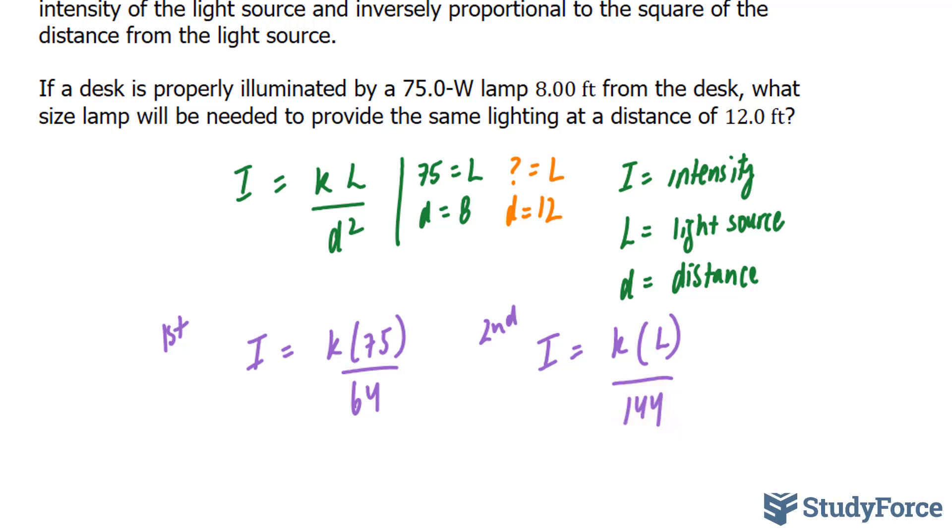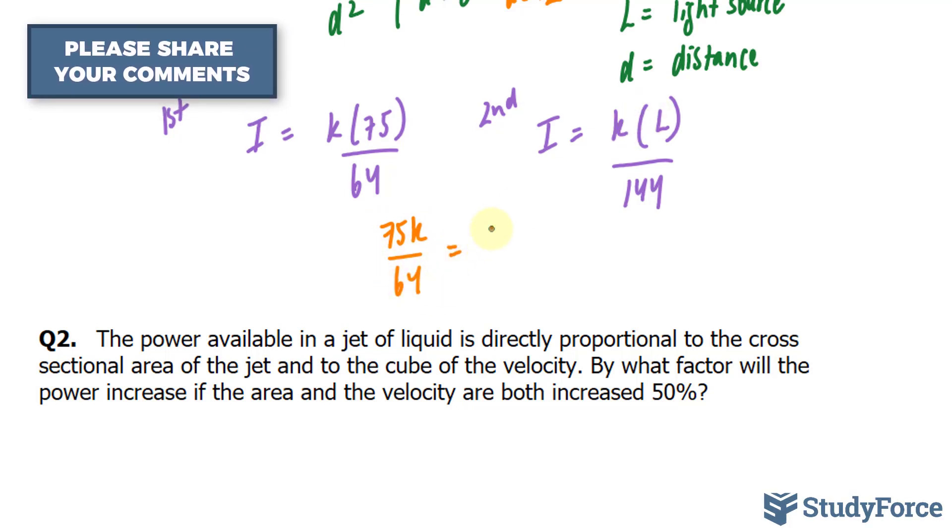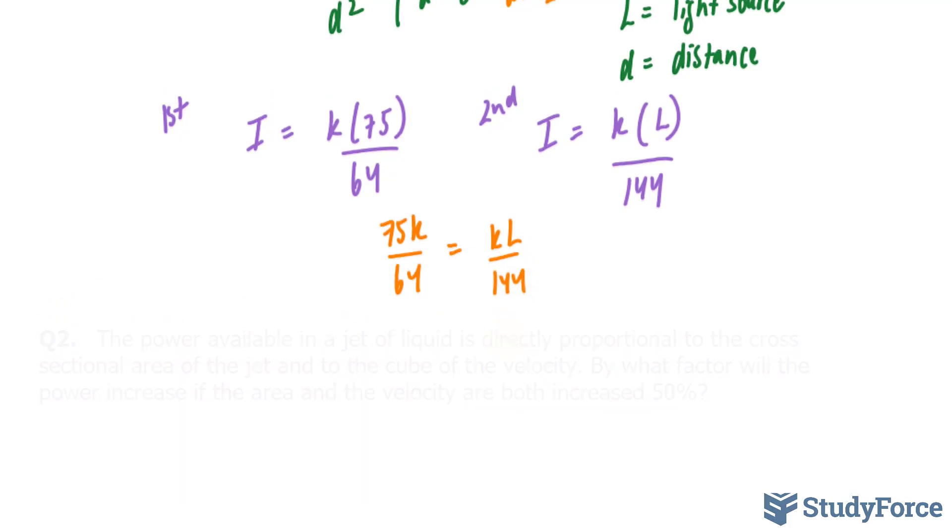Now because we have two equations and both have the variable I, we can set this part of each equation equal to each other. Here's what happens if you do that: we have 75K over 64 equals KL over 144. All I have to do from here is solve for L.